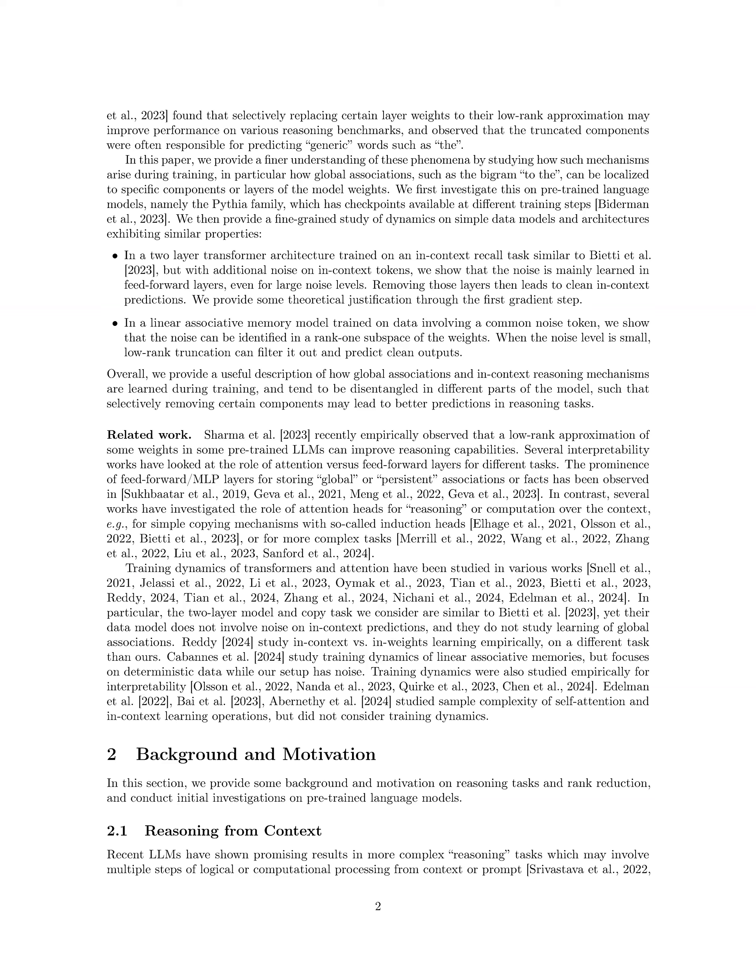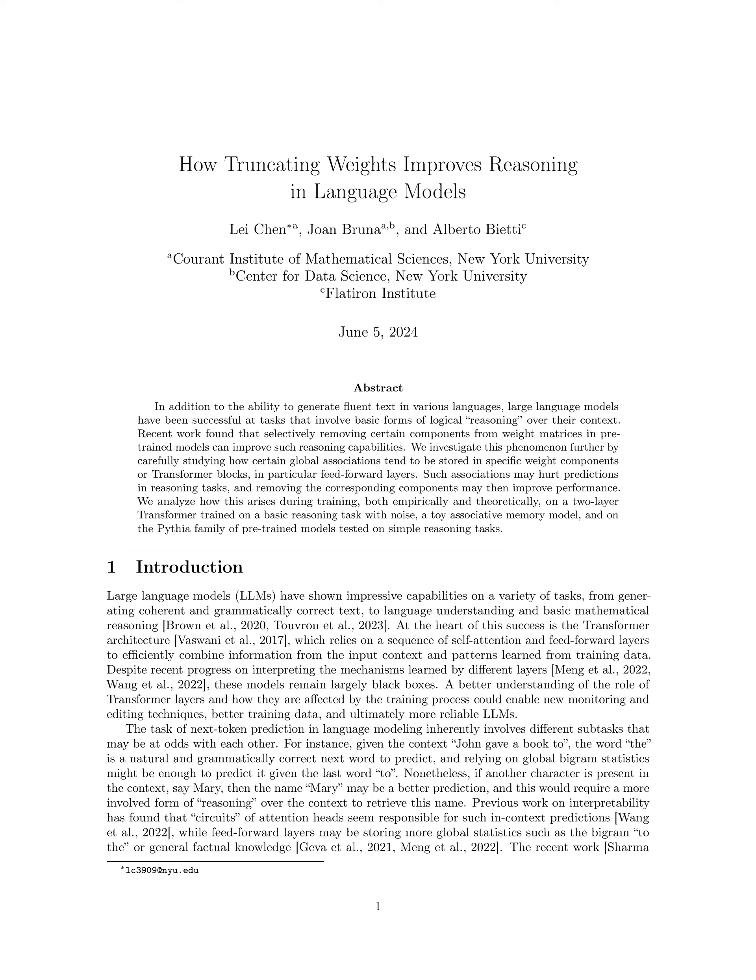The method, called Layer Selective Rank Reduction (LASER), focuses on selectively replacing certain layer weights with their low-rank approximations to inhibit predictions of global associations and enhance in-context predictions. LASER aims to provide a finer understanding of how mechanisms arise during training, specifically how global associations can be localized to specific components or layers of the model weights.